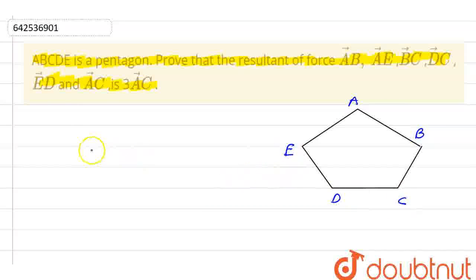Now we have to prove that the resultant force of vector AB plus AE plus BC plus DC plus ED and plus AC is 3 times AC.